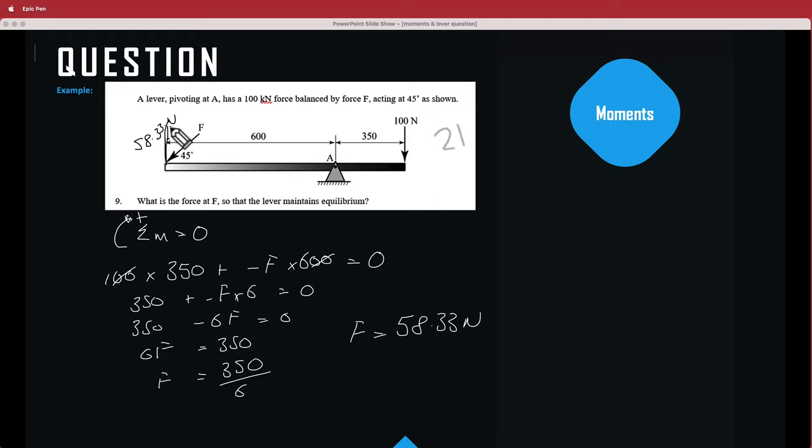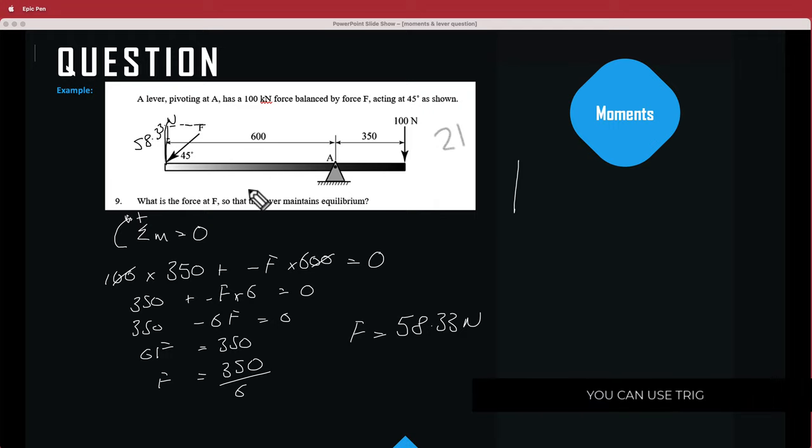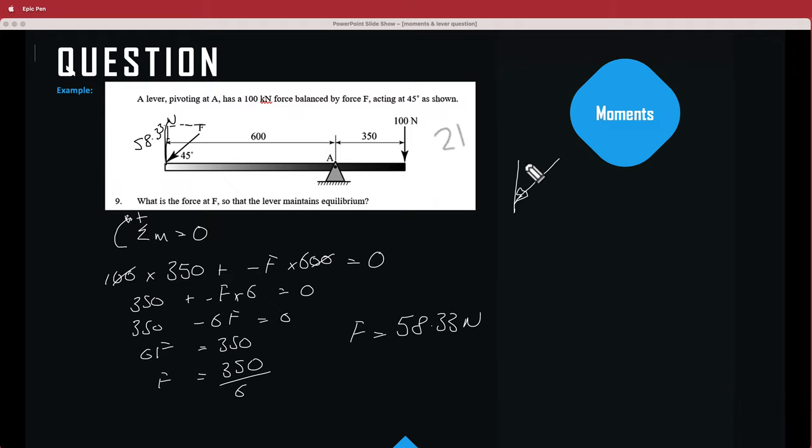But what we need to find now is this horizontal component. So let's say we redraw this triangle here. I'm going to have this straight line which represents this. We have our force which is going in like that. And we need to basically find this side over here. We know that angle is going to be 45 degrees. This is going to be a right angle. So now we have H over here, we have our opposite over here, and we also have A over there.